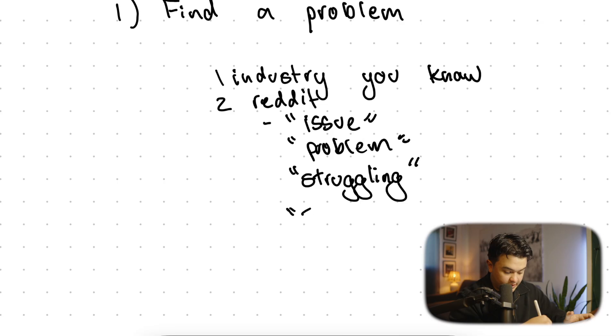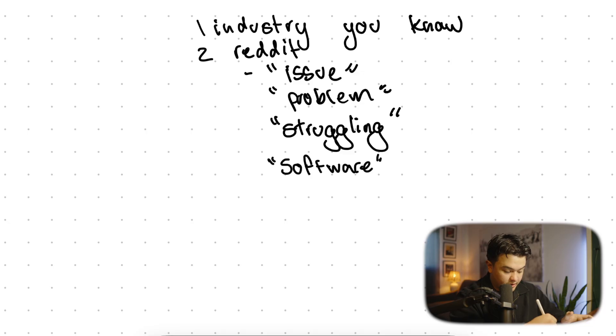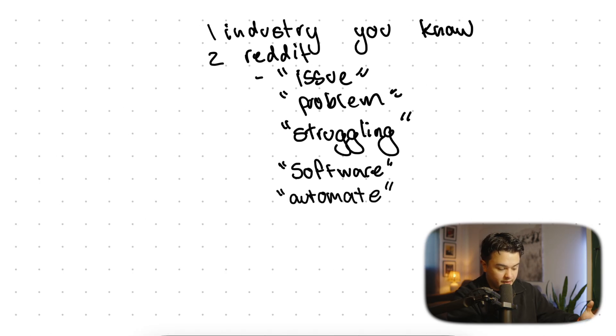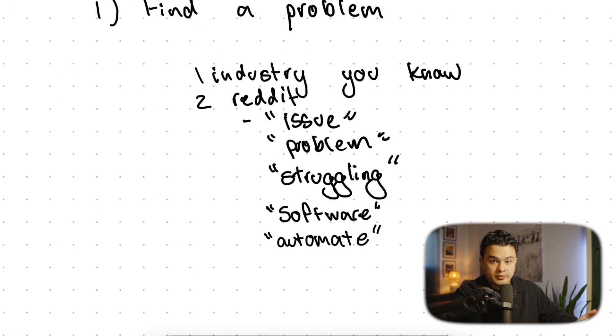All of the posts with these keywords will pop up. You can even search for stuff like software or automate. This is literal gold. Because once you find a Reddit post for gym owners asking about a specific software because they're struggling with something, and all of the comments are like, there's no real great solution right now, I've had to do this all manually, you struck a goldmine because you can build a software for them that solves this exact thing.